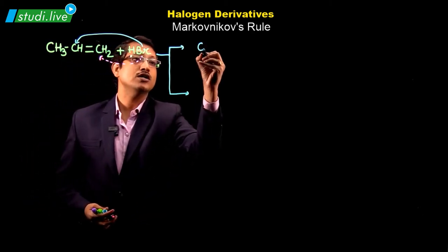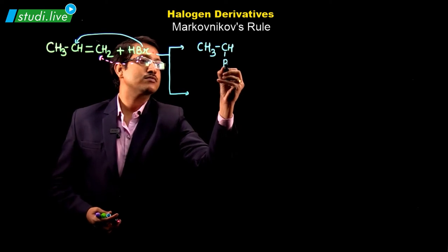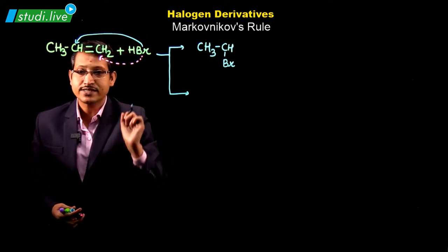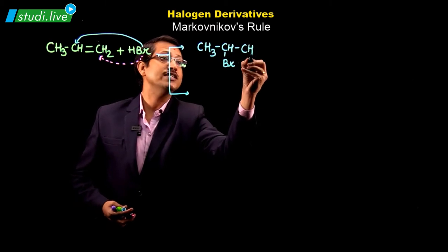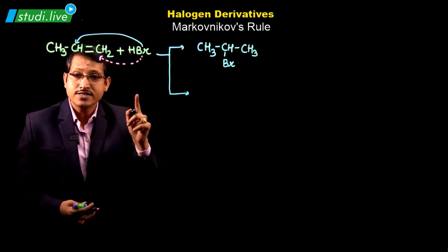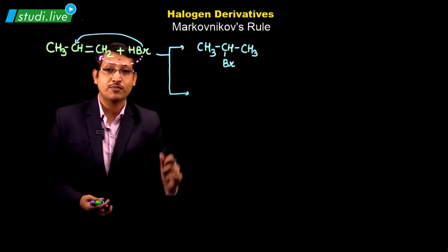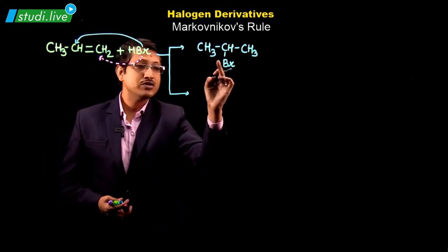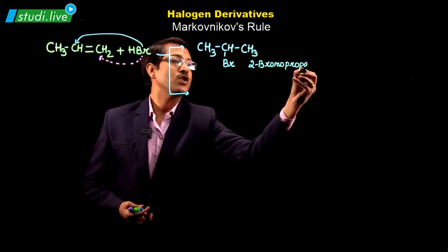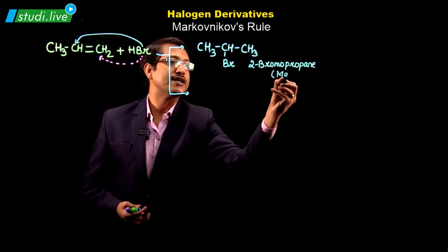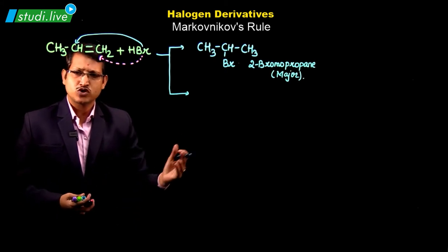Starting with the first possibility where Br gets attached to CH — what will be the product? We have CH3, then CH with Br attached, and the H that is left out combines with CH2. Since it is an addition reaction, the number of bonds are reduced. This gives you CH3–CHBr–CH3, which is called 2-bromopropane. This is the major product — generally we call it 80%.